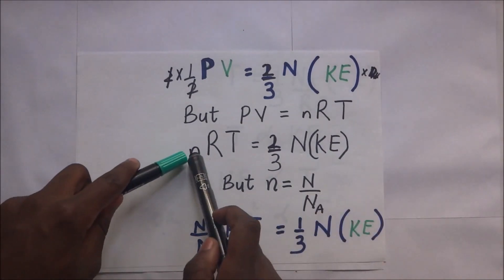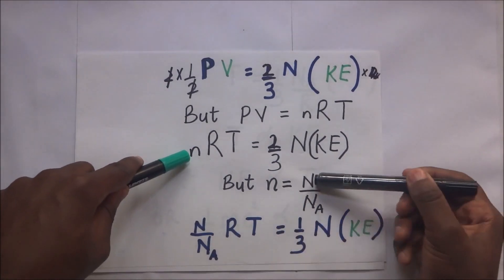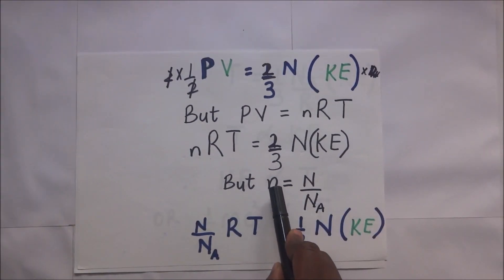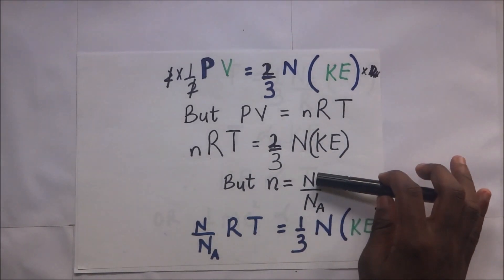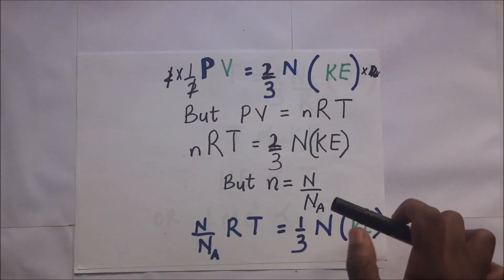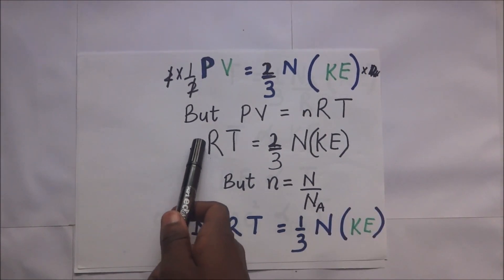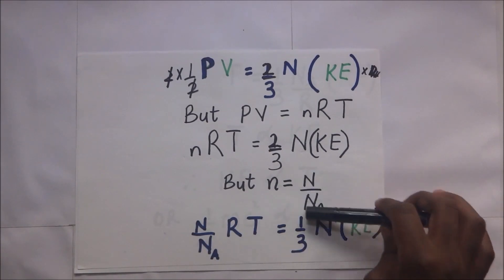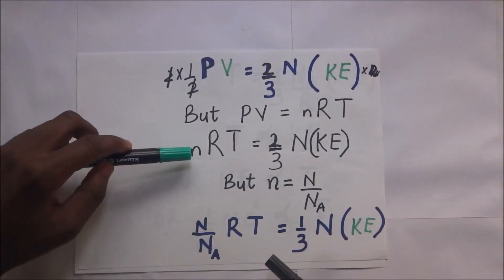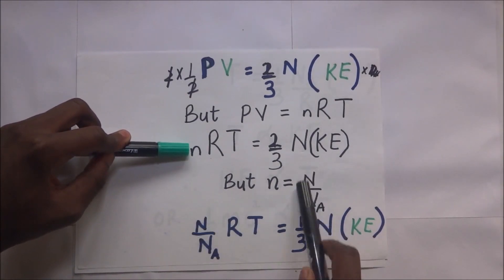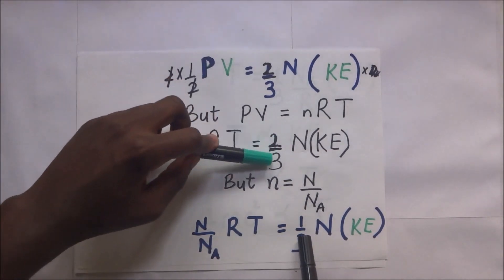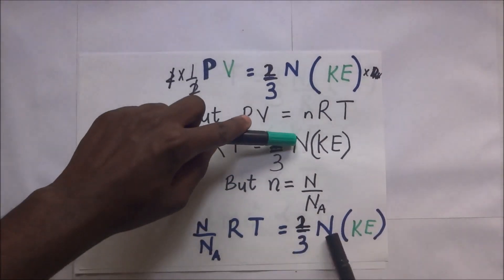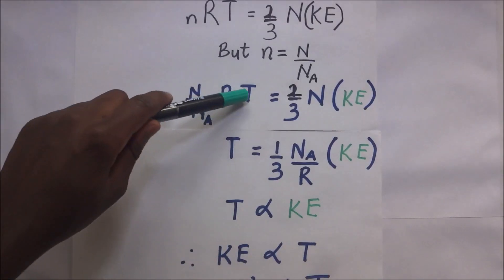We know that the number of moles, small n, is given by the total number of particles in the gas divided by Avogadro's number. So the number of moles can be represented by capital N divided by Nₐ, Avogadro's number. We substitute for small n: where there is n we put N over Nₐ. So this step becomes (N/Nₐ) times R times T equals two-thirds times capital N times the kinetic energy.